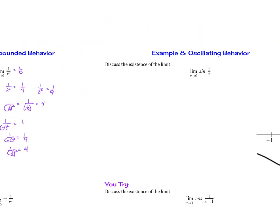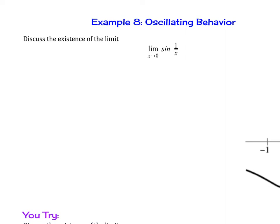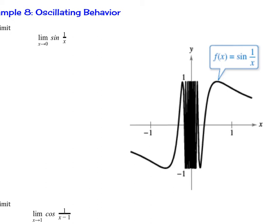Now let's take a look at oscillating behavior. Discuss the existence of the limit as x approaches 0 of sine of 1 over x. So if you try to graph this, I'm going to show you what the graph looks like. This is what the graph looks like if you tried to plug it in. Notice that it is oscillating continually between positive 1 and negative 1, and it keeps on going back and forth, back and forth.